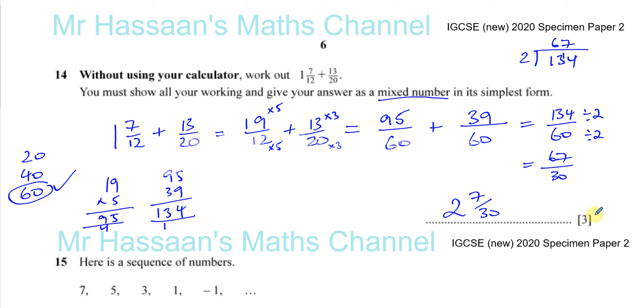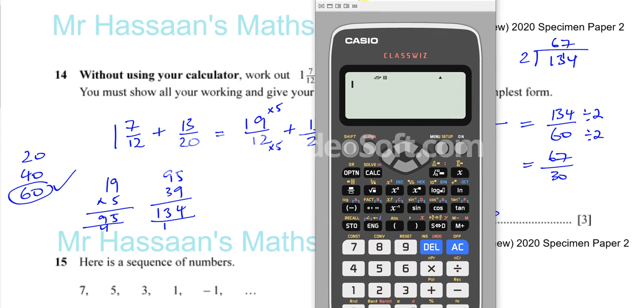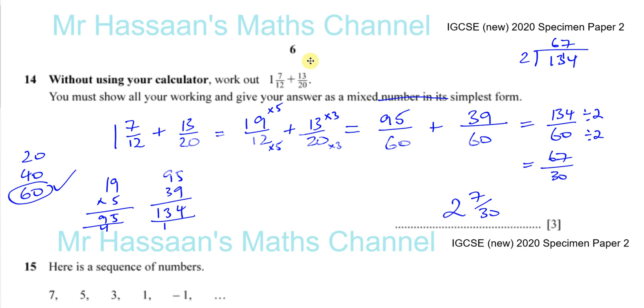So 2 and 7/30 is the answer to question number 14. They gave us kind of biggish numbers to deal with, but it's perfectly fine. Always make sure, in case you made a silly mistake which is quite possible, to check with your calculator.